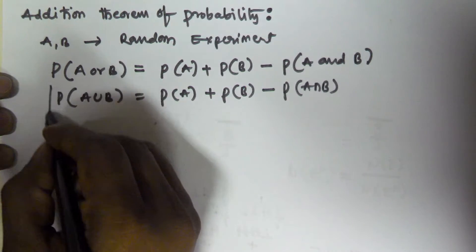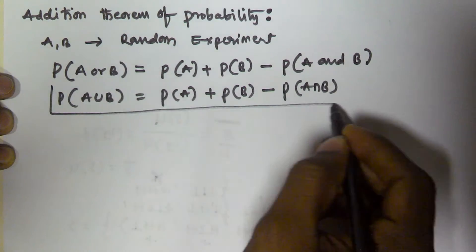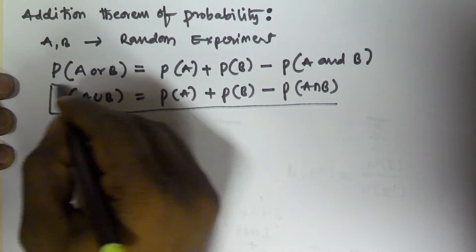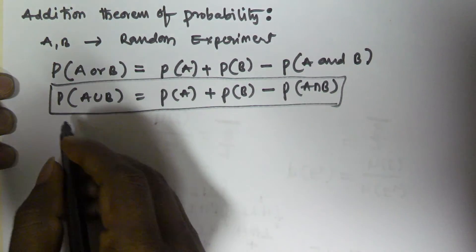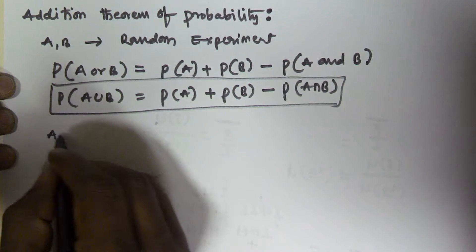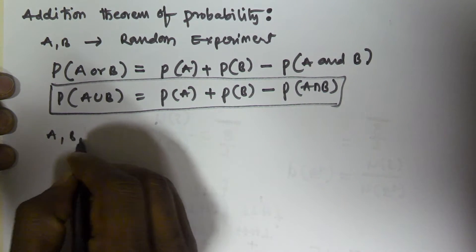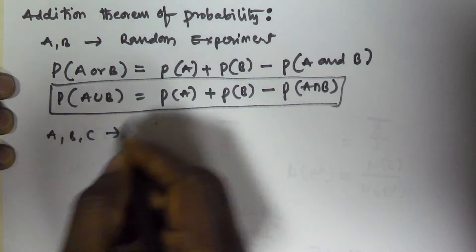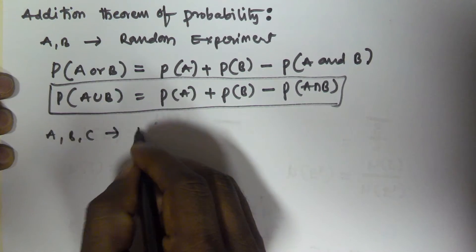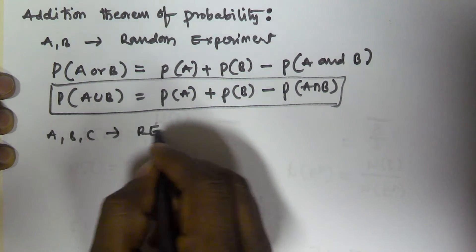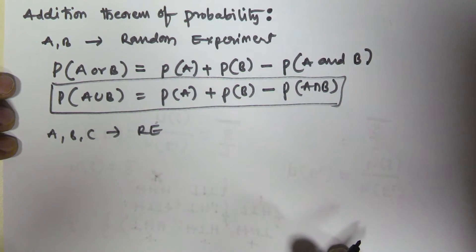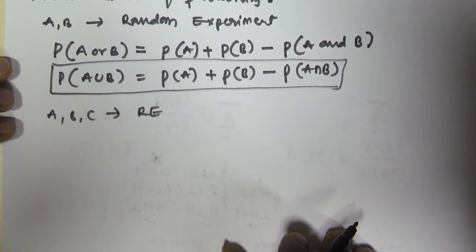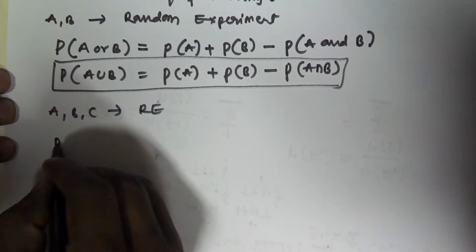So this is the addition theorem of probability. For example, whenever three events A, B and C are associated with a random experiment, then the addition theorem is going to be like this.